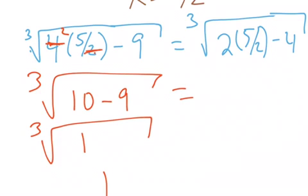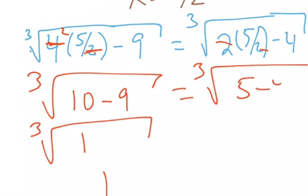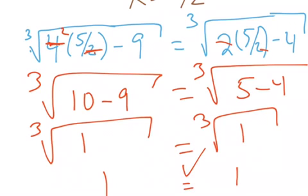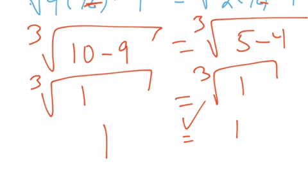I'm going to do the same thing on the other side. The 2's cancel out, leads me with the cube root of 5 minus 4, which is the cube root of 1. Which, by the way, means I can stop here and say it's true. But if I go one step further and get the answer of 1 is 1, and that's true as well.